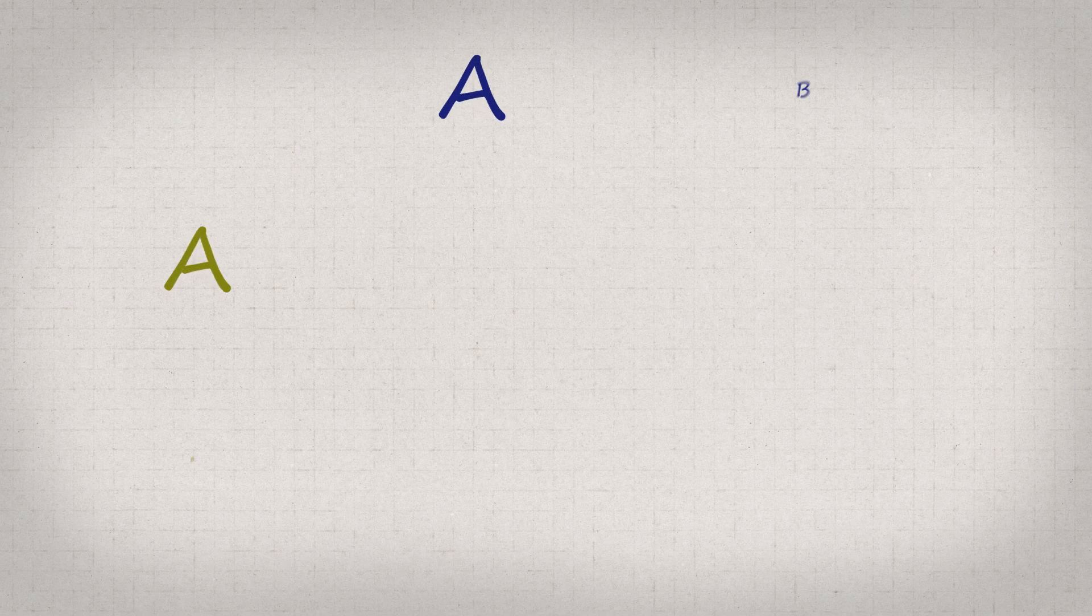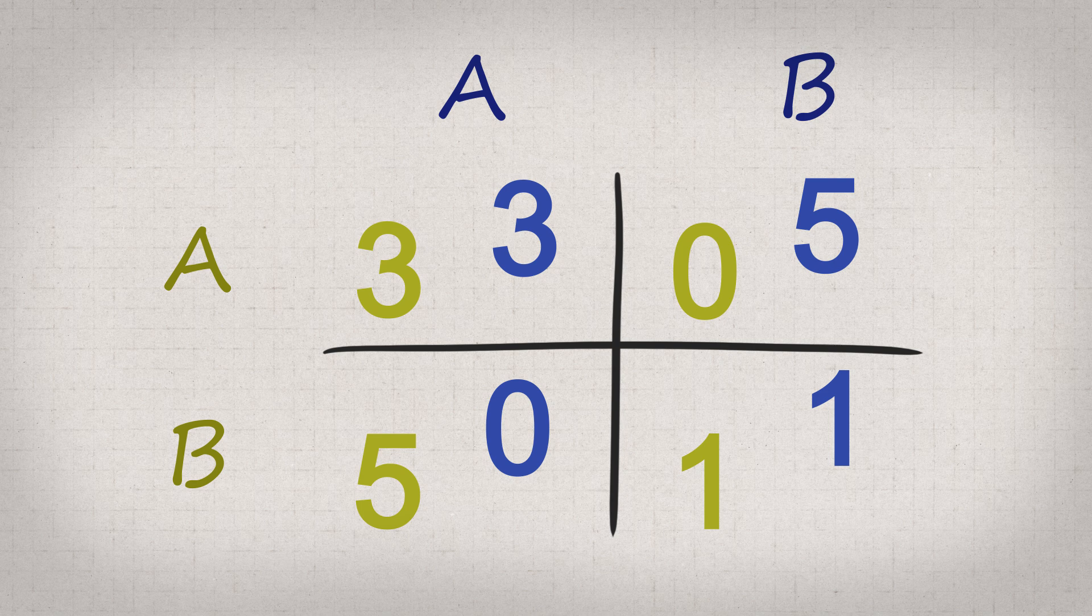Let's say two people have two options, and which option they each pick is going to define how much stuff they get with one another. The numbers represent something they want, like money or points. Everybody likes points, they want as many points as they can get.